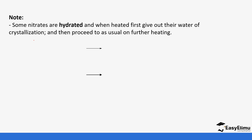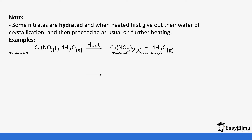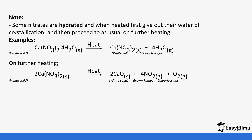Some of these nitrates going down the group are hydrated. When heated, they first give out water of crystallization. For example, calcium nitrate with four molecules of water — when you heat it, you produce anhydrous calcium nitrate and water is given off. If you continue heating further, the calcium nitrate decomposes to give calcium oxide, nitrogen dioxide, and oxygen gas.